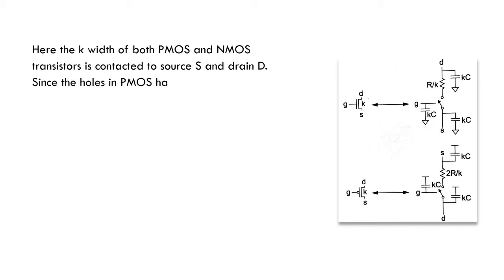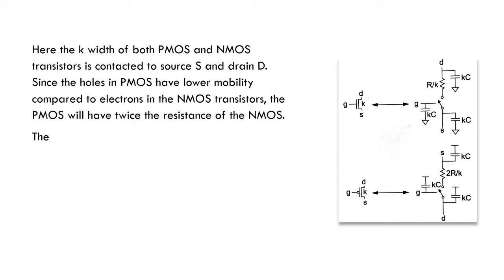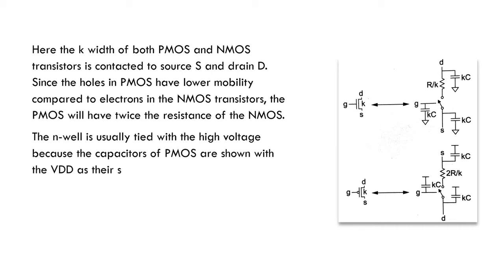Since the holes in PMOS have lower mobility compared to electrons in the NMOS transistors, the PMOS will have twice the resistance of the NMOS. The N-well is usually tied with the high voltage because the capacitors of PMOS are shown with VDD as their second terminal in the figure shown above. Similarly in NMOS, the capacitors are connected to ground because usually P-well will be connected to lower supply.